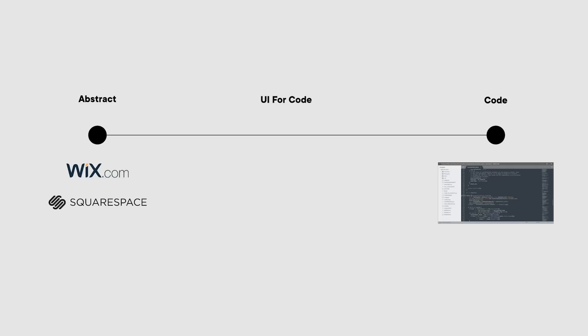Then we have the middle options. I call them "UI for code," which basically means you're almost coding the website yourself, but instead of actually writing code, a UI for code has been created — an interface to manipulate the code — so you're almost coding up the website yourself. And here we have a spectrum as well.